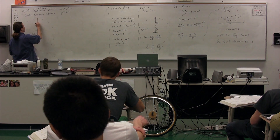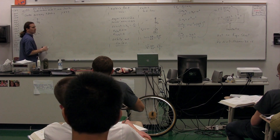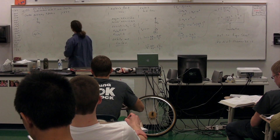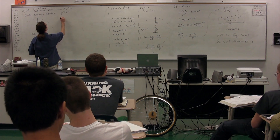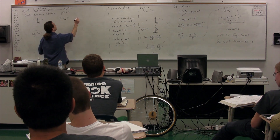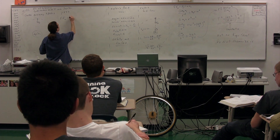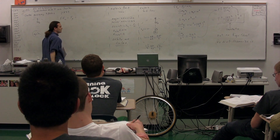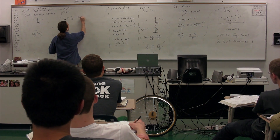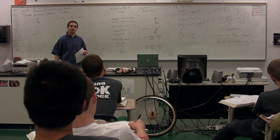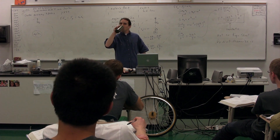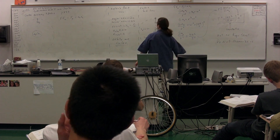We start with our free body diagram — we have the force of gravity. Sum of the forces equals mass times acceleration, centripetal. F sub g stands for force of gravity, which equals mass of the satellite times centripetal acceleration. Centripetal means center-seeking, or inward.